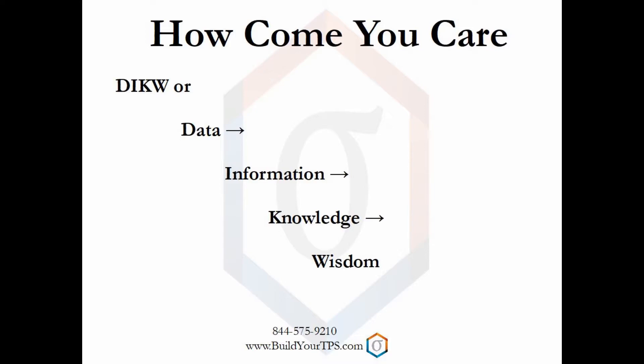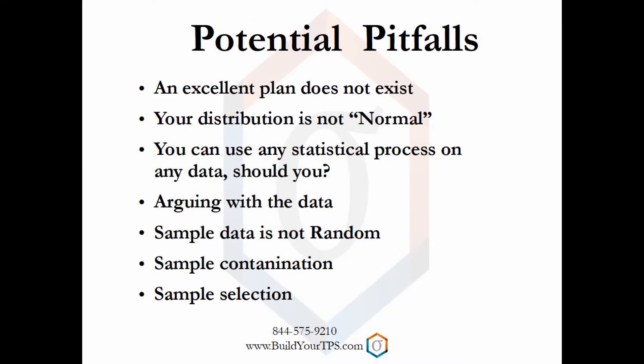I discuss statistical pitfalls next. Building a robust plan can both be the hardest and the most important thing to do. There are statistical tests you perform if your distribution is normal and others you perform if the distribution is not normal. You can view a distribution to determine normalcy or you can perform a statistical test to determine if the distribution is normal. You can take any data that you've collected and run it through any statistical test to come up with an answer — that is not the challenge. The challenge is to determine the correct statistical test so the answer has relevance.